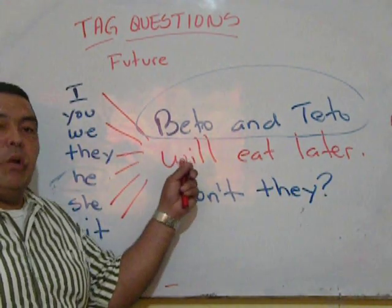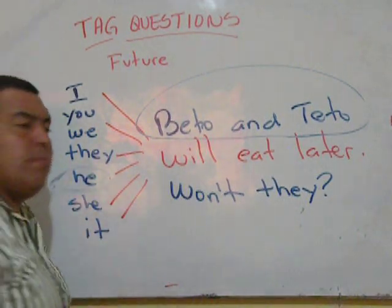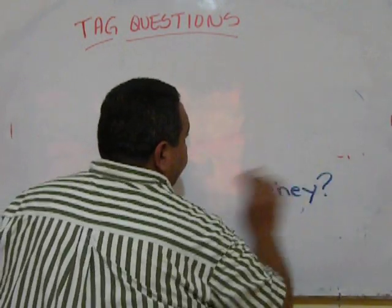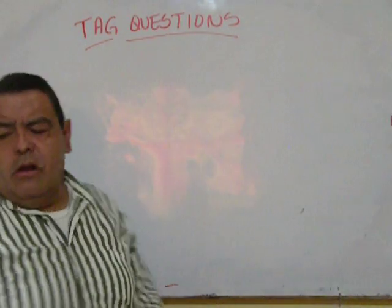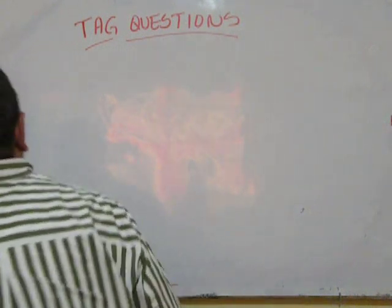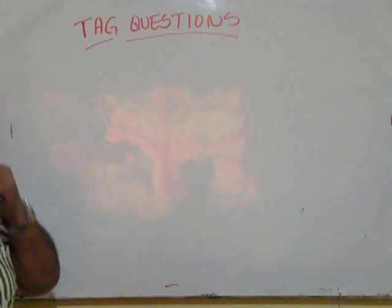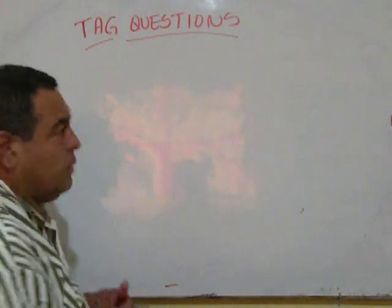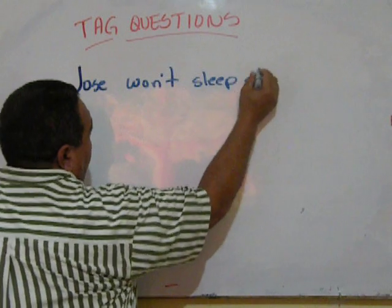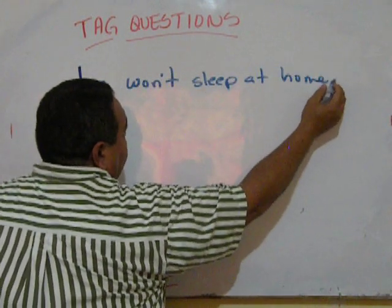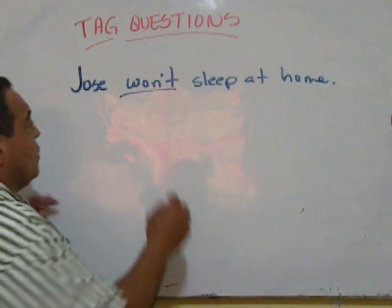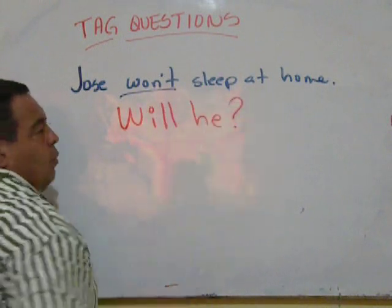Now, this is whenever we use will, but remember, do you remember that we can express the future with be? For example, just some of you may be wondering, what about the negative expression? Yes. Kosei won't sleep at home. Negative. So, the tag question has to go in affirmative expression. Will he.